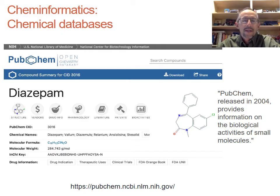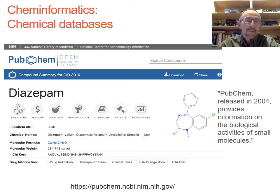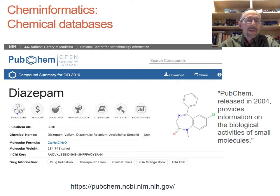If we can represent chemicals on a computer, we can store them and build databases. Chemical databases are extremely useful for drug discovery applications. One of the best known is PubChem from the National Institutes of Health National Library of Medicine. This is a page from PubChem for diazepam, also known as Valium — it includes the structure and much data about that compound. PubChem has roughly 100 million distinct compounds and provides all kinds of cheminformatics functionality, including searching by names and by chemical structure.